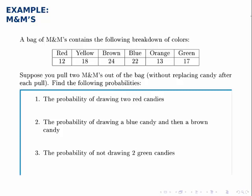First, the probability of drawing two red candies. So since we're drawing without replacement, the events are not independent, so we have to think about the conditional probability.